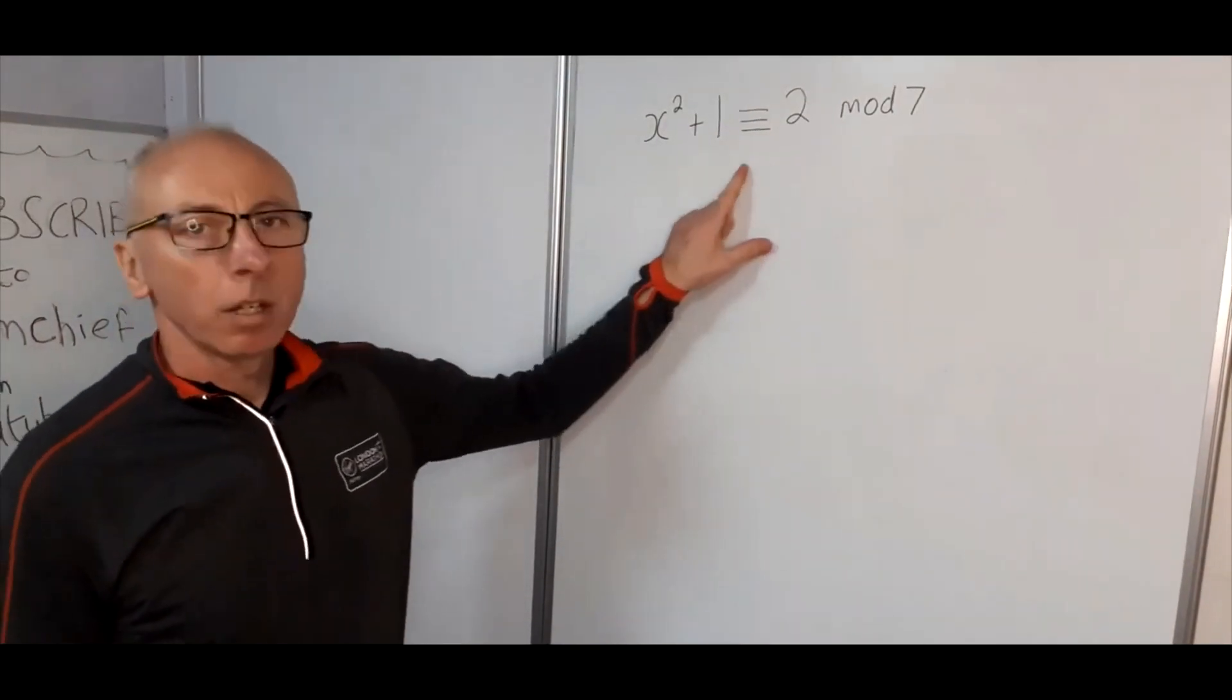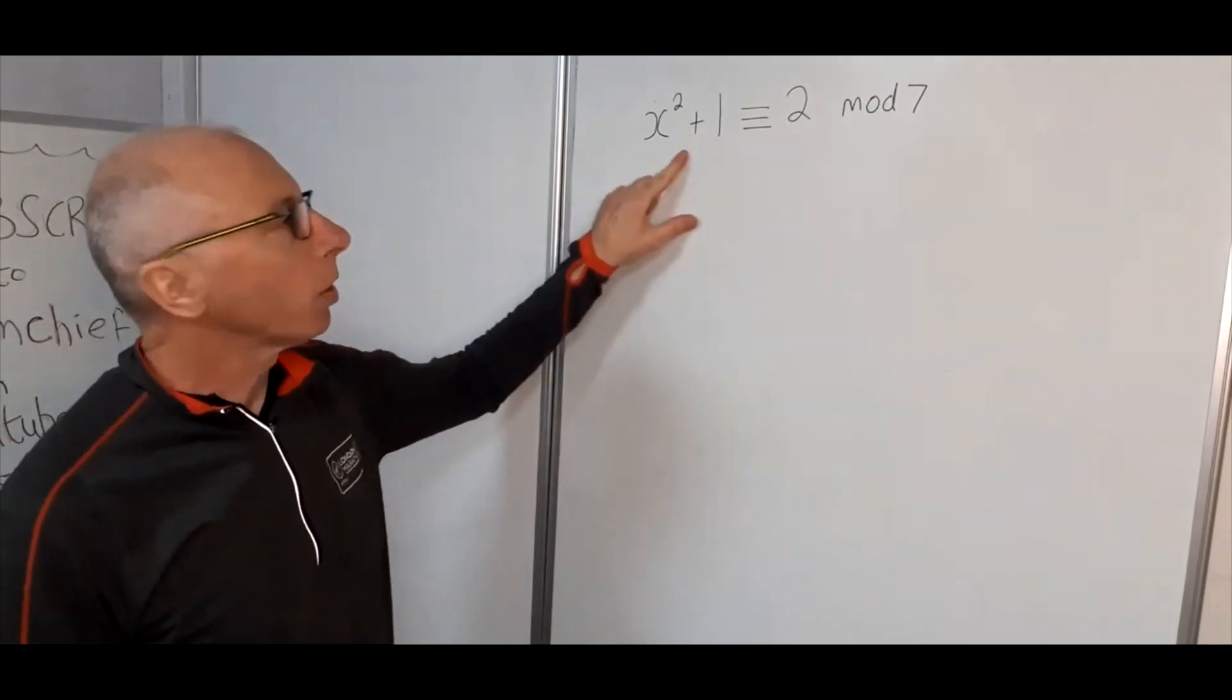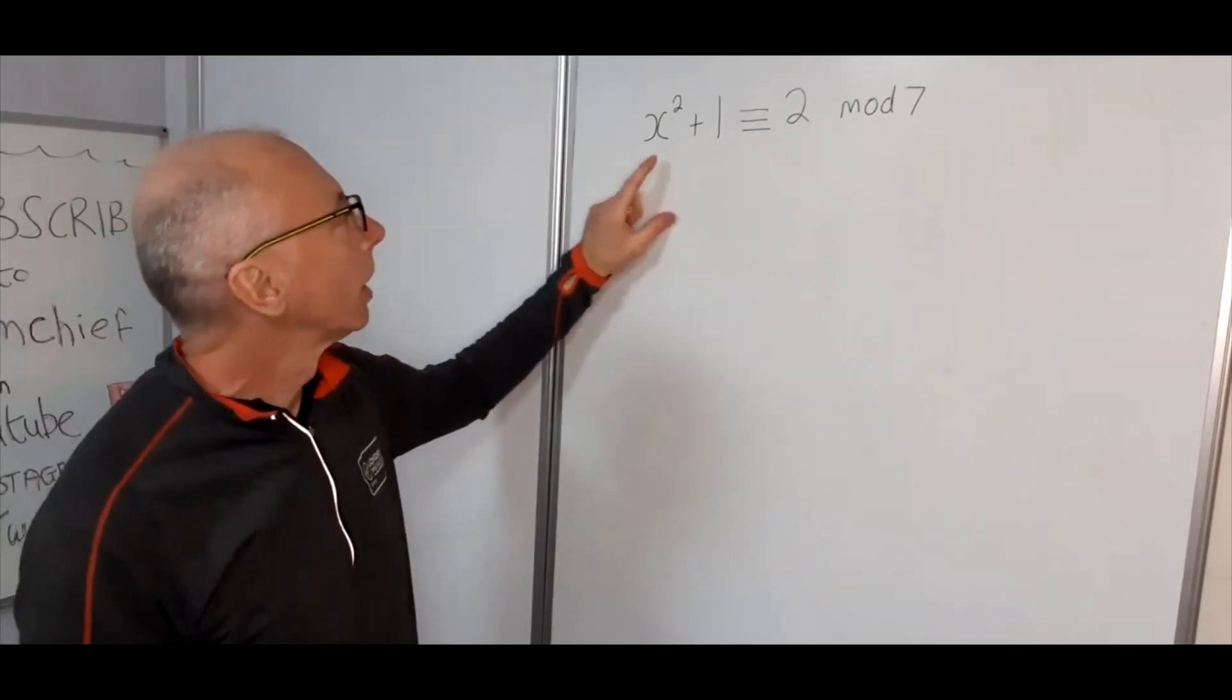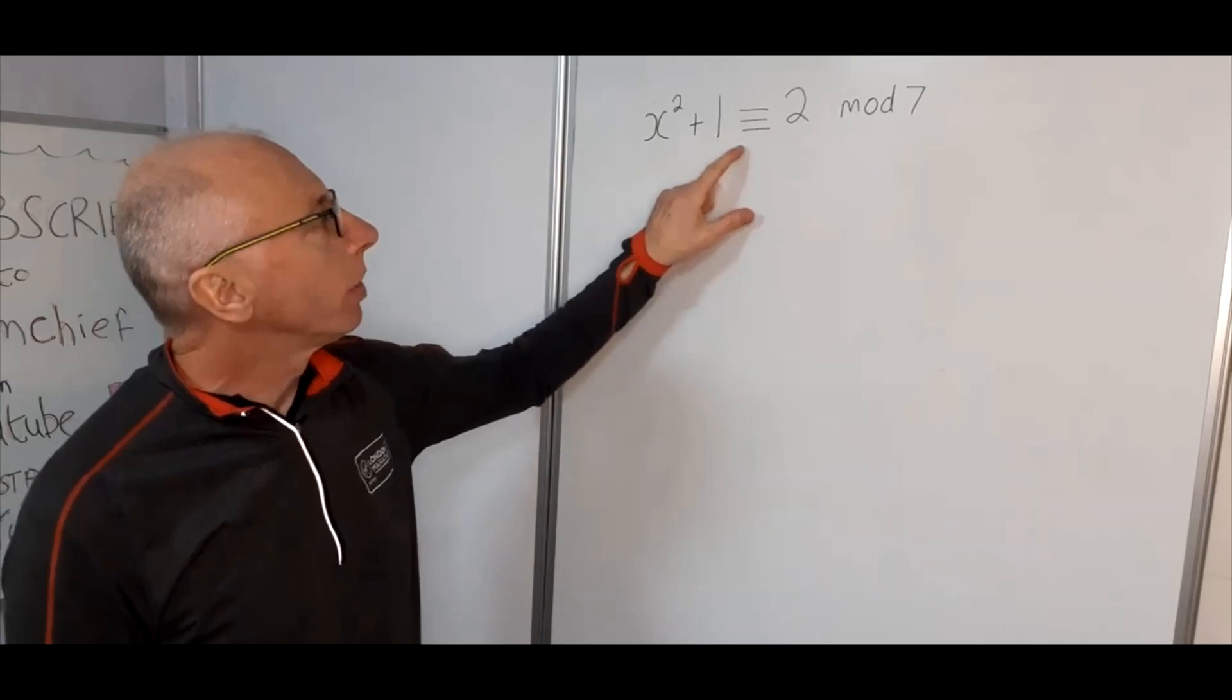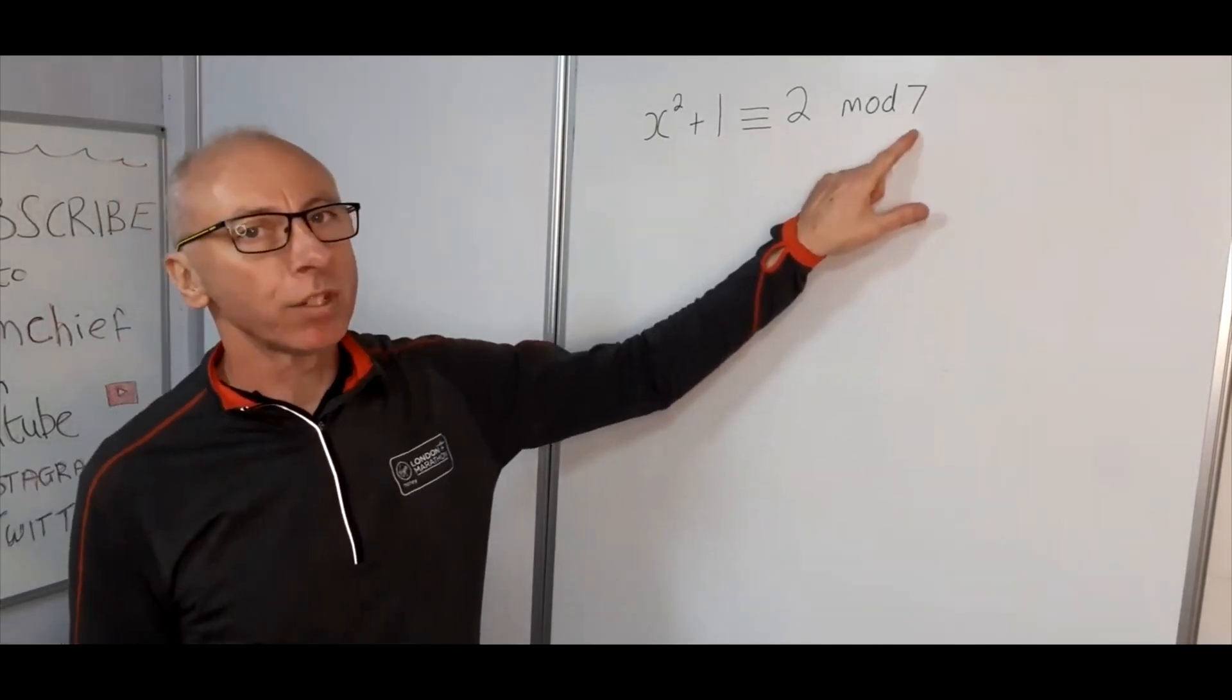Okay, so we've got a question here. We're going to try and solve what's called a quadratic congruence question, and we've got x squared plus 1 is congruent with 2 modulus 7.